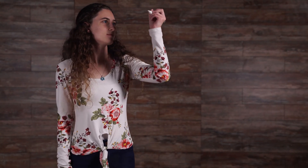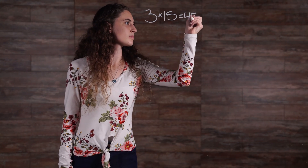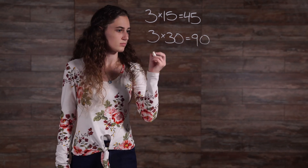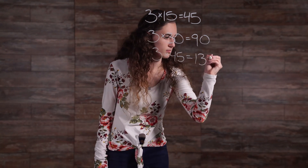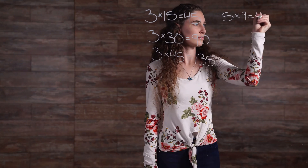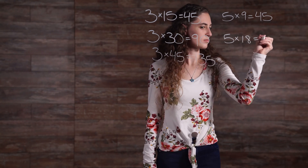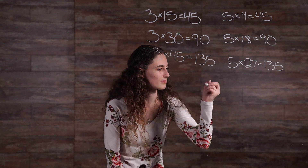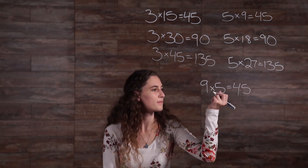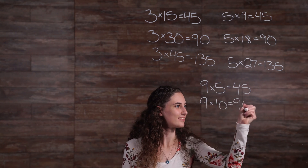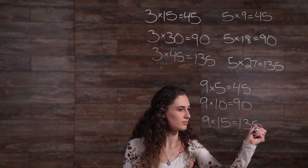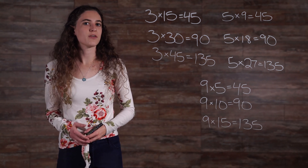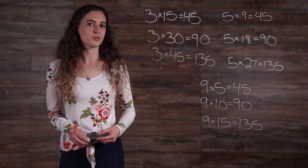We can find common multiples of more than two numbers as well. Let's look at 3, 5, and 9. 45, 90, and 135 are all common multiples of 3, 5, and 9.